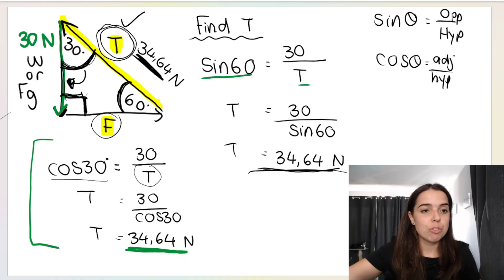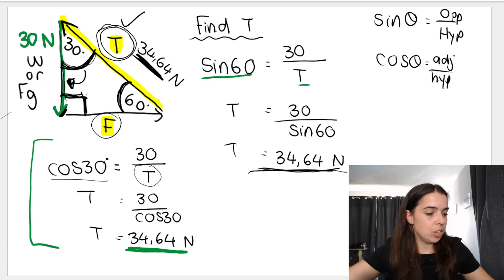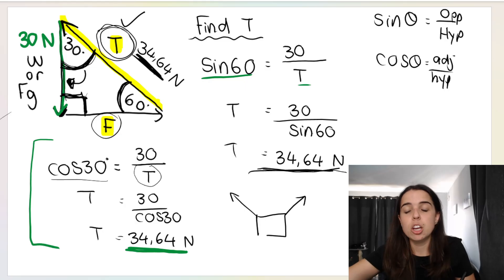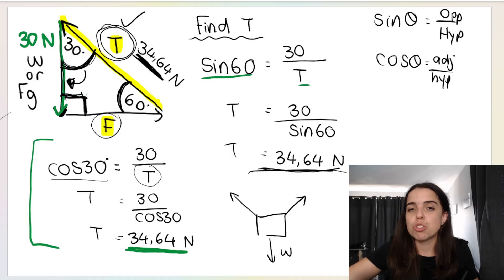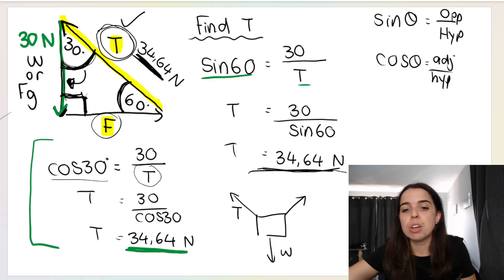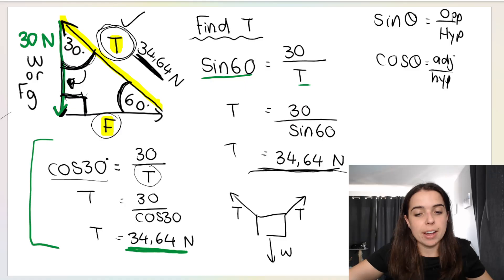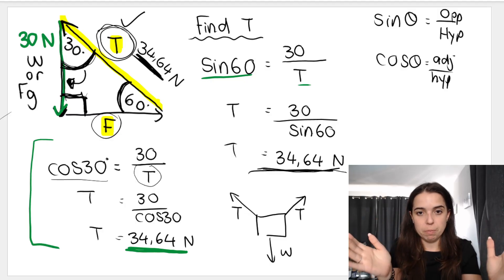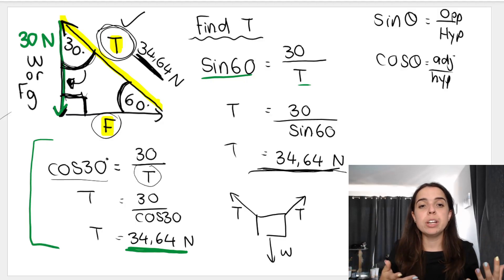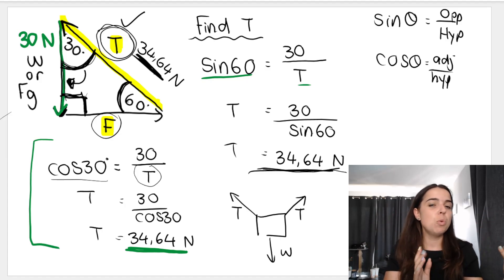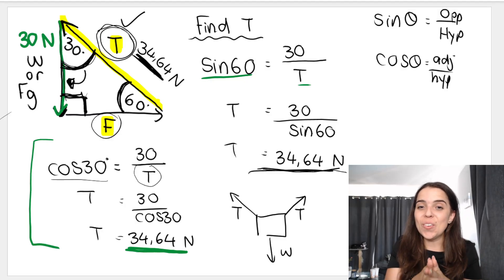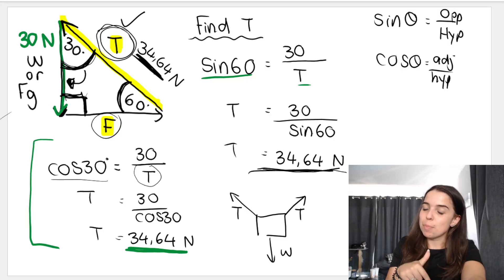One last remark — a teacher tip. If you have a situation where two ropes are connected to an object, when you draw your triangle of forces you cannot label both arrows T. If you label them both T, you're saying the forces in both ropes are the same, and we don't know if that's true — it's more than likely that the tensions are different. So call one T1 and T2, or tension X and tension Y. Look at your diagram and label accordingly.